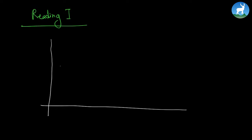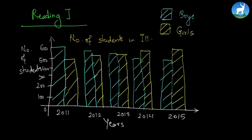Now we are going to start the reading exercise. I have roughly tried to sketch the given bar diagram. This shows the number of students of a public school in Elam. We have years on the x-axis and number of students on the y-axis.